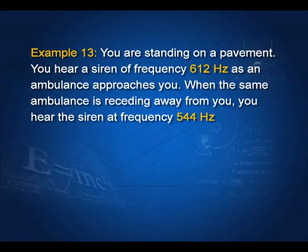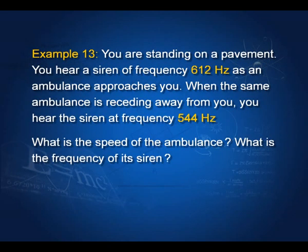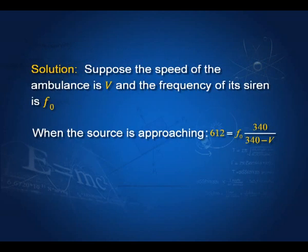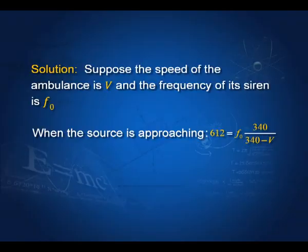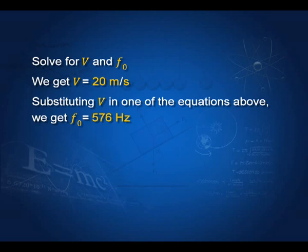Example: standing on a pavement, you hear a siren at 612 Hz as an ambulance approaches, and 544 Hz as it recedes. Using the Doppler formula: 612 equals F₀ times 340 by (340 minus V) for approach, and 544 equals F₀ times 340 by (340 plus V) for recession. Solving these two equations gives F₀ equal to 576 Hz and V, the speed of the ambulance.